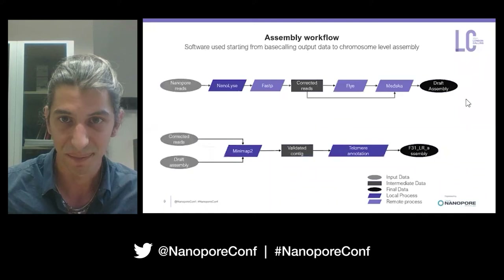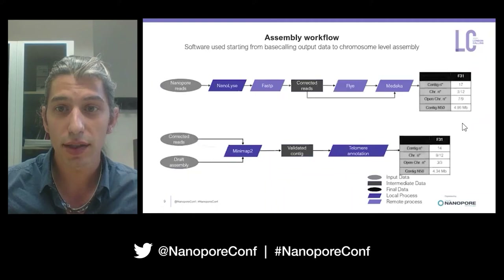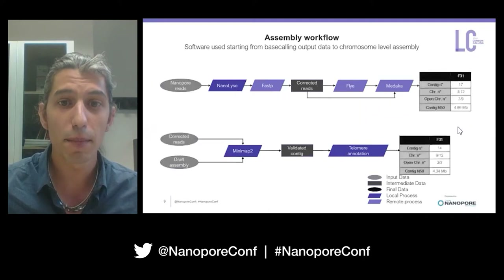Here are shown the two phases of the assembly. The first flowchart shows the assembly, while the second is the workflow of the manual correction. Just two numbers to compare before and after manual correction: the number of contigs decreased very close to the real number, 13, which is the 12 chromosomes and the mitochondrial DNA. Also, the number of closed chromosomes increased from 3 to 9.